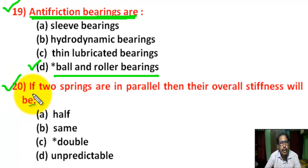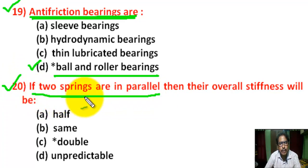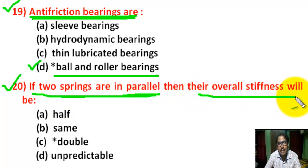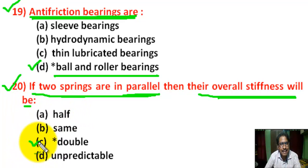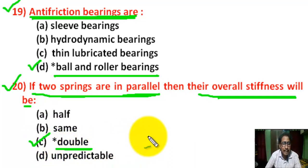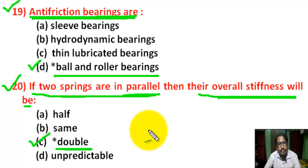Question number 20: if two springs are in parallel, then the overall stiffness will be — there are 4 options. Correct answer is C: Double. The equivalent or overall stiffness K equals K1 plus K2.